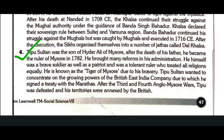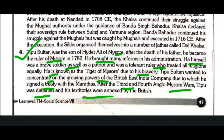Last question: Who was Tipu Sultan? Write briefly about his achievements. Tipu Sultan was the son of Hyder Ali of Mysore. After the death of his father, he became the ruler of Mysore in 1782. He brought many reforms in his administration. He was a brave soldier, a patriot, and a tolerant ruler who treated all religions equally. He is known as the Tiger of Mysore. Tipu Sultan wanted to counter the growing power of the British East India Company and signed a treaty with the Marathas. After the Third and Fourth Anglo-Mysore Wars, Tipu was defeated and his territories were annexed by the British.